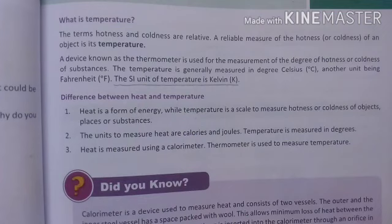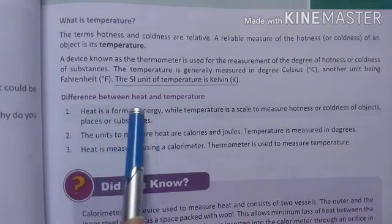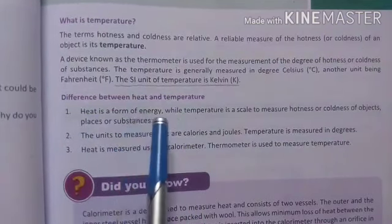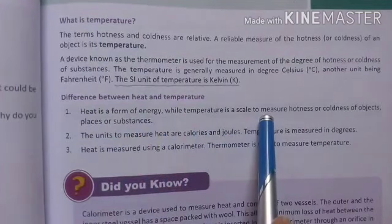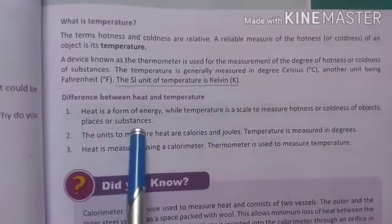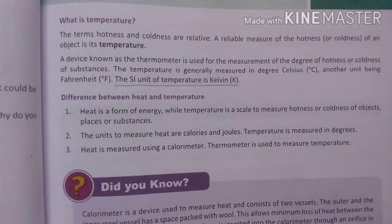It is better for you to understand how Kelvin and Celsius degrees differentiate from each other. Now the next topic is the difference between heat and temperature. Heat is a form of energy, while temperature is a scale of measuring the hotness and coldness of an object, place, or substance. When you rub your two hands together you feel energy in your hand — how much energy you get is indicated by temperature, measured as the hotness and coldness of the object.